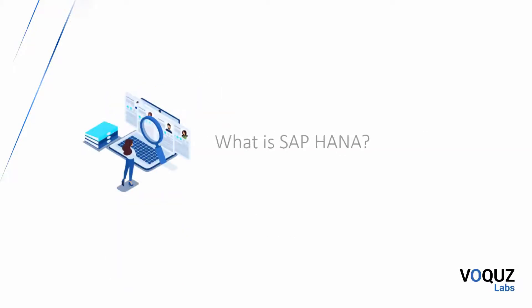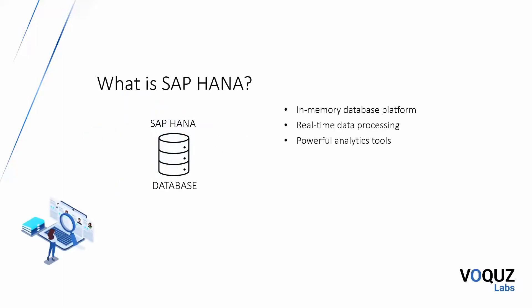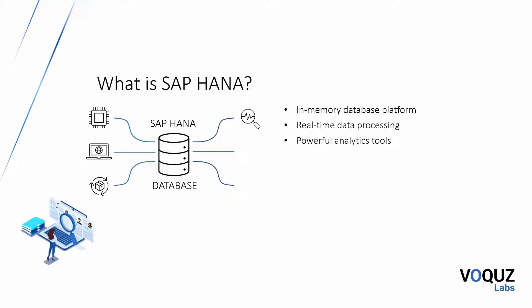So what is SAP HANA? SAP HANA is an in-memory database platform with a multitude of data visualization, query and analytics add-ons. The in-memory technology allows SAP customers to process large volumes of data in real time and provides powerful tools for accelerated data analytics.